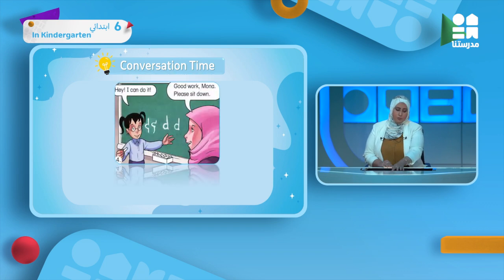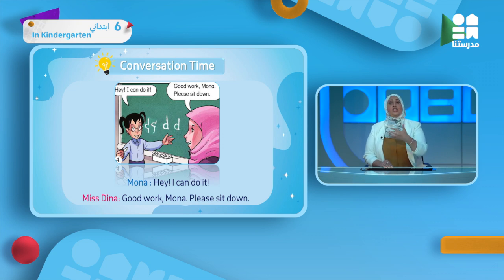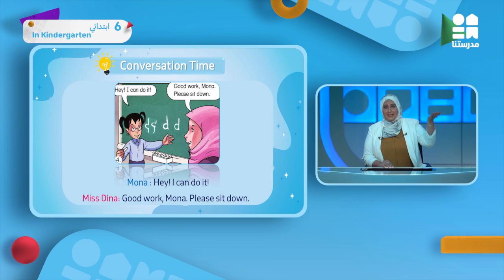Looking at the picture, Mona seems happy. She says: 'Hey, I can do it!' She found out she can do it — she was able to write the letter D on the board after Miss Dina showed her how. Miss Dina says: 'Good work, Mona. Please sit down.' Sit down is the opposite of stand up.